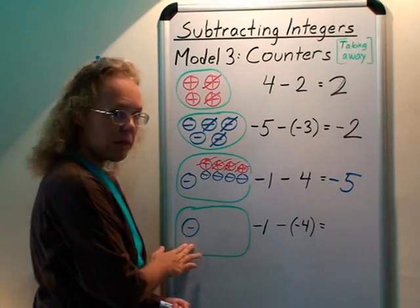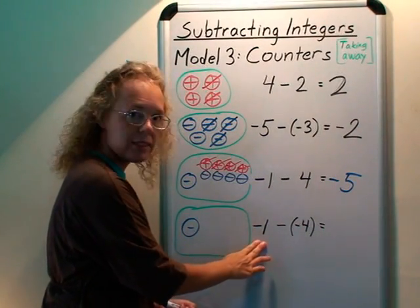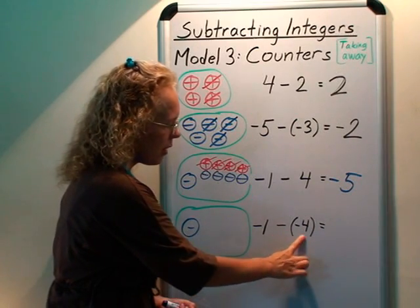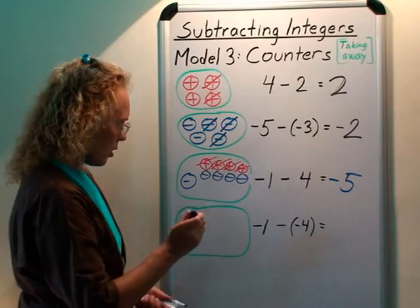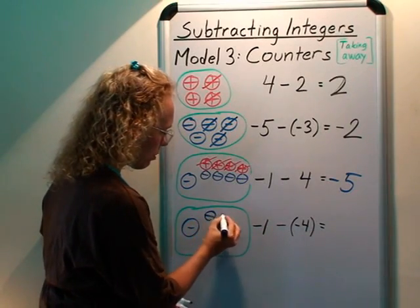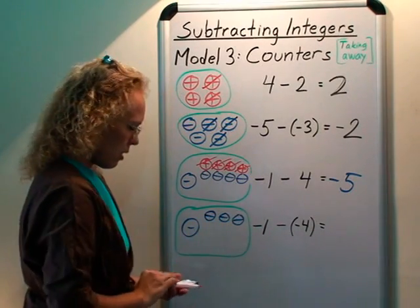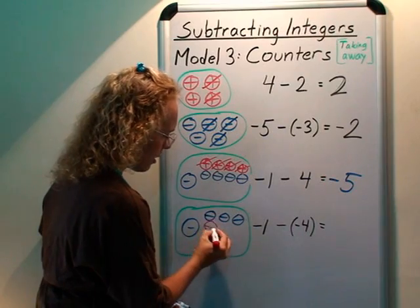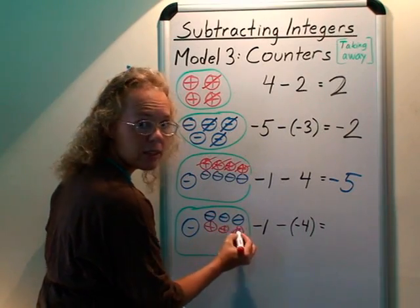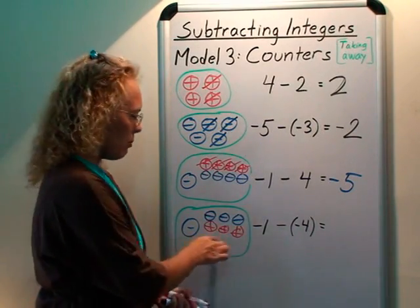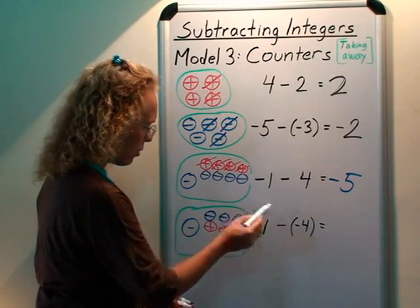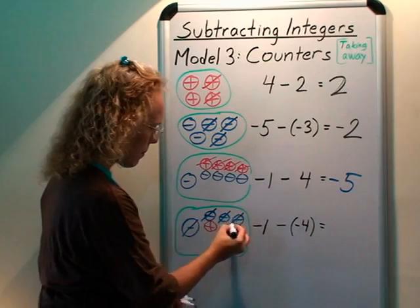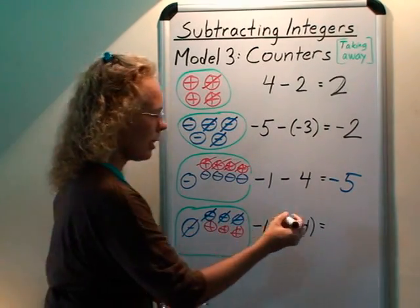And here this is similar. You start out with 1 negative counter. And you should take away 4 negative counters. But there is only 1. So I am going to add 3 more negative counters, or 3 positive negative pairs, which amounts to 0. And then after that I can cross out 4 negatives. And it's going to leave me with 3 positives.